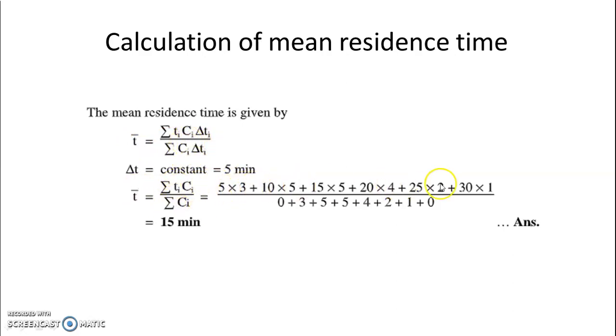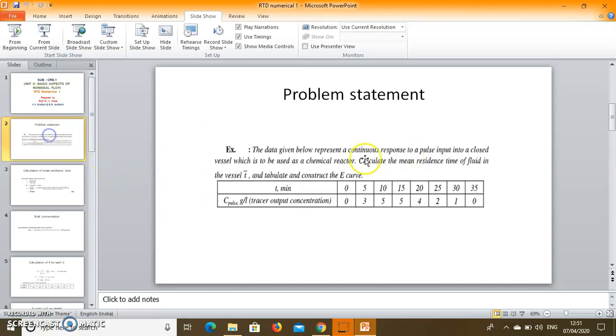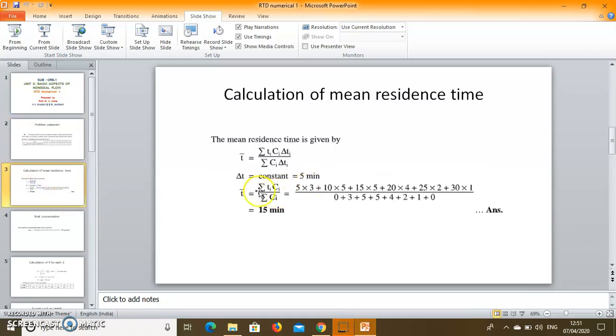It will be according to the table what we understood in the numerical. In the numerical there is a time difference of 5 minutes. Each 5 minutes. So here T bar can be calculated by using summation concept also. So T bar is summation of Ti, Ci upon summation of Ci.